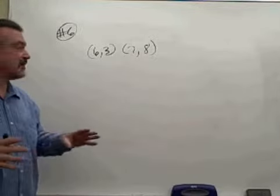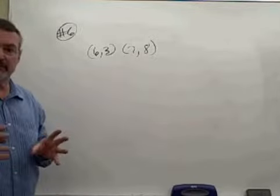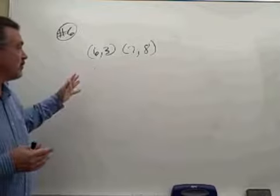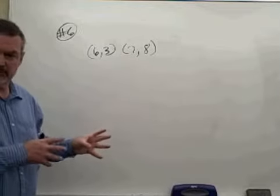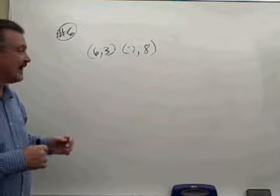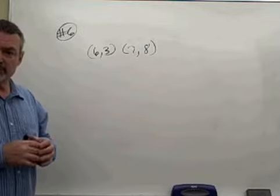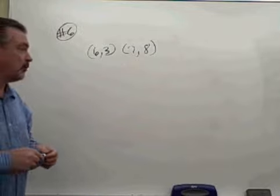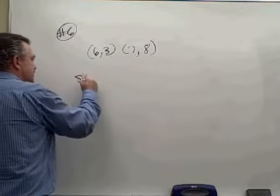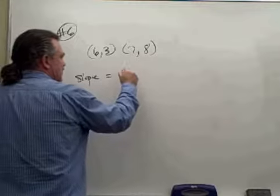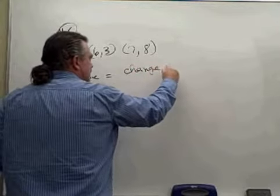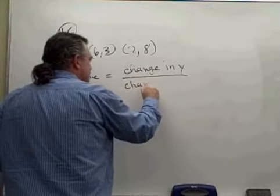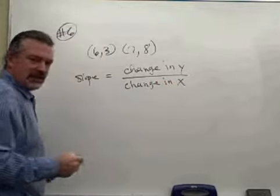Here in problem six, we are wanting to find the slope of the line that would pass through the points we've been given. If we were to plot them on the coordinate plane and draw the line that intersects those points, we want to know what the slope of that line would be. The key thought for slope is to always keep in mind that slope is the change in Y, or the change in the vertical, divided by the change in X, the change in the horizontal.